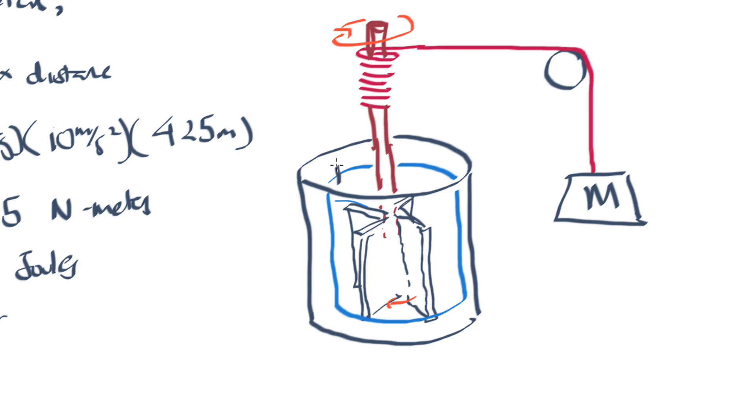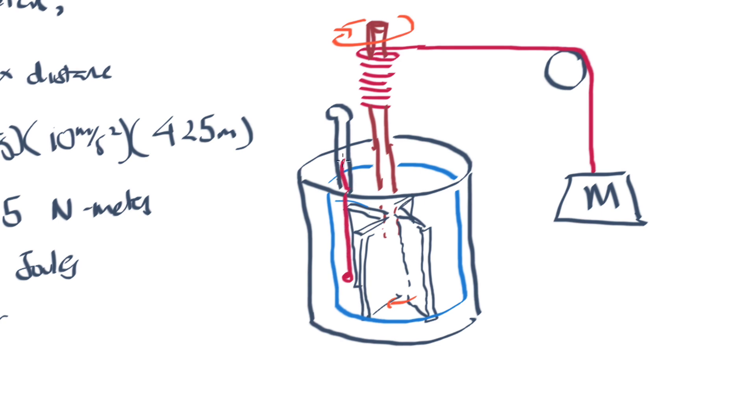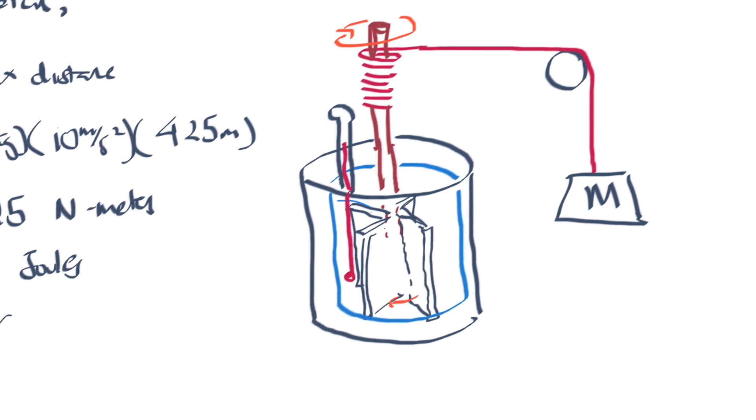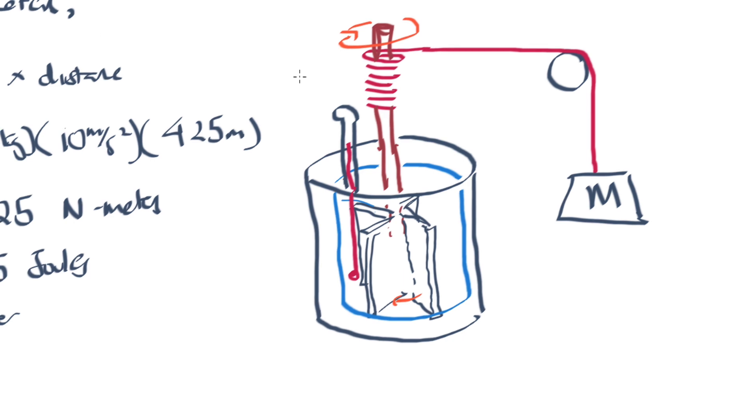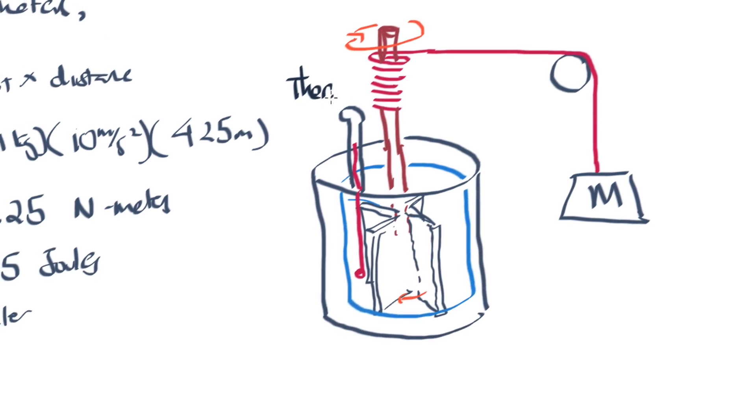And if you then put a thermometer in the water, you could measure what the temperature rise of the water would be. So, you might imagine this is a mercury-filled thermometer, maybe an alcohol-filled thermometer, and you measure the temperature of the water. So, let me label a couple of these things. This is the thermometer right here.